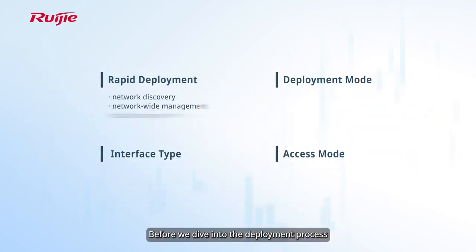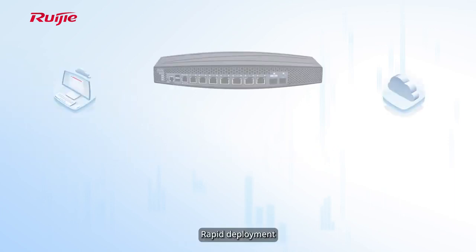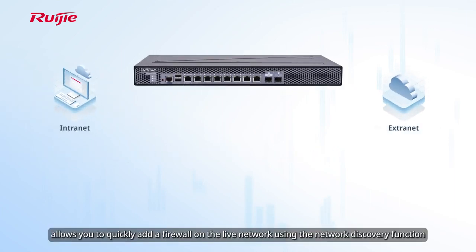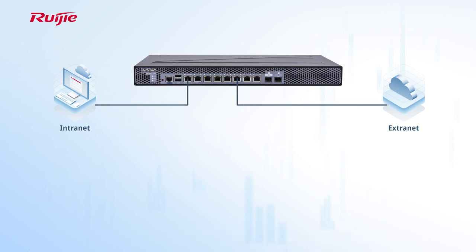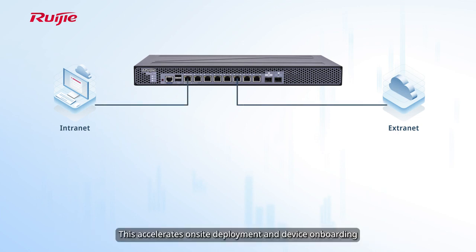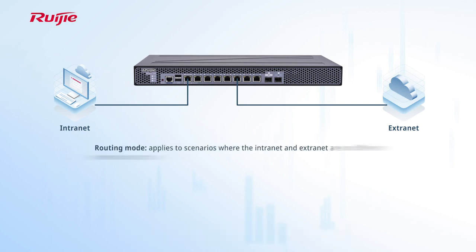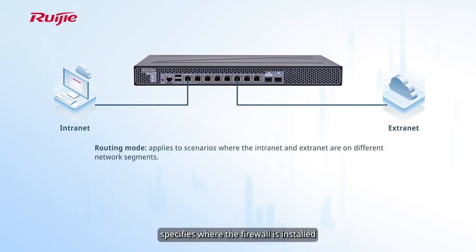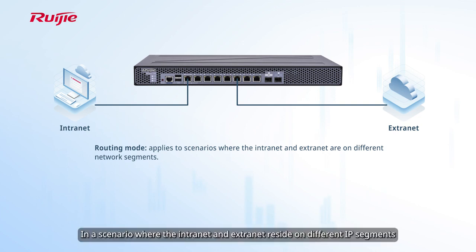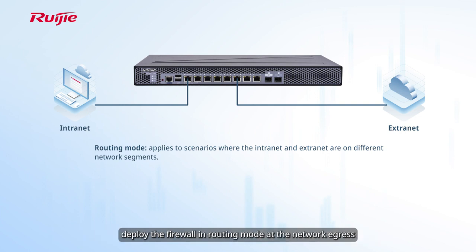Before we dive into the deployment process, let's clarify a few key concepts. Rapid deployment allows you to quickly add a firewall on the live network using the network discovery function, accelerating on-site deployment and device onboarding. Deployment mode specifies where the firewall is installed. In a scenario where the intranet and extranet reside on different IP segments, deploy the firewall in routing mode at the network egress.